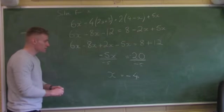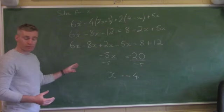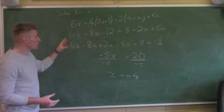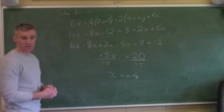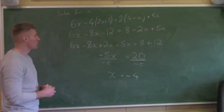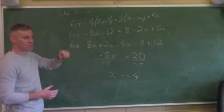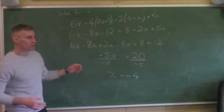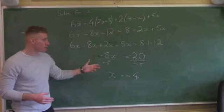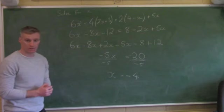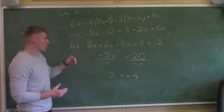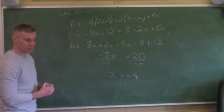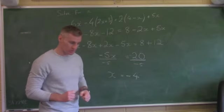It's a short question in paper 1, probably worth 10 marks. What are they examining? That you're able to multiply out in algebra, rearrange the sum, add your x's and numbers, and finally simplify it down. We need to put it in step by step and try not to skip any steps. Let's do another one of those questions.